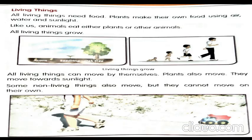We will read page number 71. All living things can move by themselves — saari living things apne aap move kar sakti hain. Plants also move — plants bhi move karti hain. They move towards sunlight — sunlight ki taraf move karti hain. Some non-living things also move, but they cannot move on their own — lekin woh apne aap move nahin kar sakti hain. Non-living things cannot move on their own.